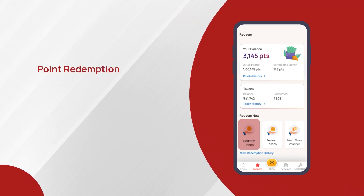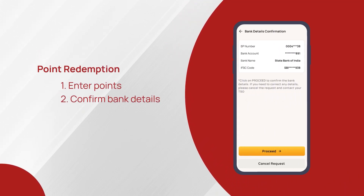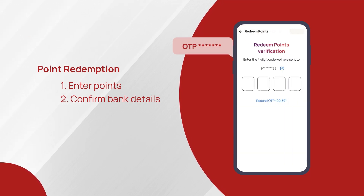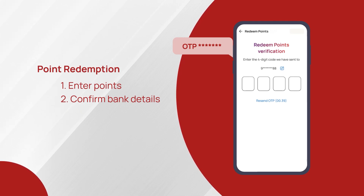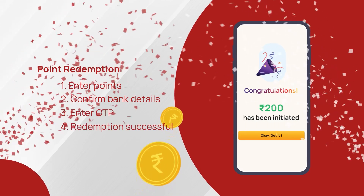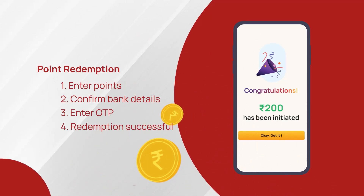Click the Redeem Points button. Enter the points you want to redeem and confirm your bank details. At this point, you will receive an OTP on your registered mobile number to authenticate the redemption, as we have now introduced OTP verification to ensure a secured redemption process. Once you enter the OTP, the equivalent amount will be transferred directly to your bank account.